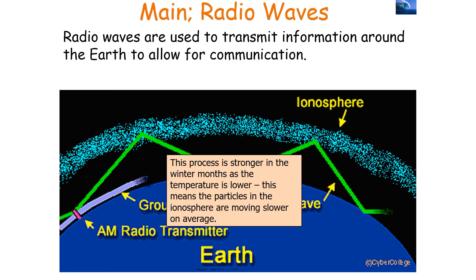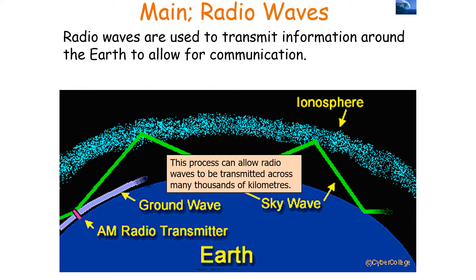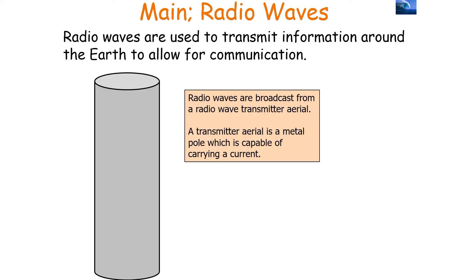This process is stronger in the winter months as the temperature is lower, so the particles of the ionosphere are moving slower on average. This makes the ionosphere denser and easier for the radio waves to reflect. This process can allow radio waves to be transmitted across many thousands of kilometres across the surface of the Earth.